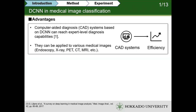With the rise of deep learning, deep convolutional neural networks have been used in many areas. Especially in medical image classification, computer-aided diagnosis systems based on the CNN can reach expert-level diagnosis capabilities. And they can be applied to various medical images such as endoscopy, PET, CT, MRI, and so on.